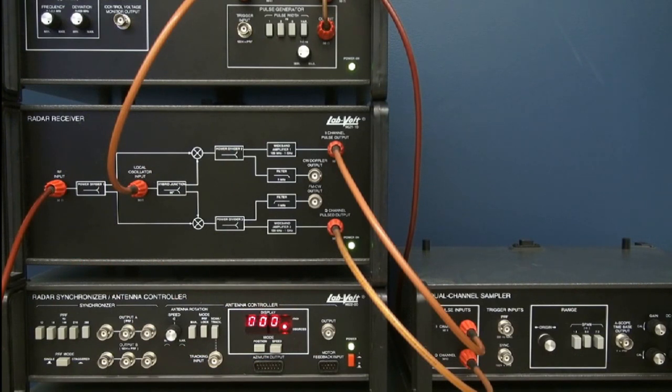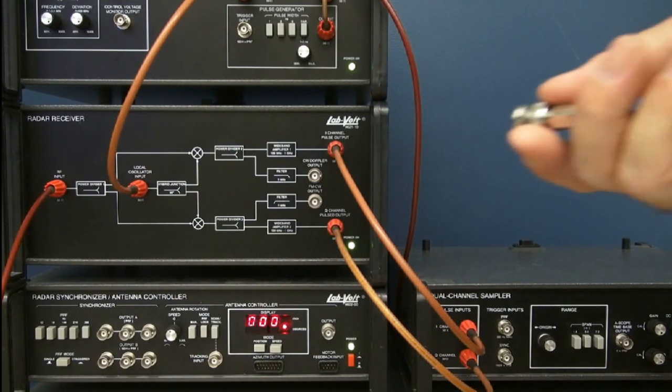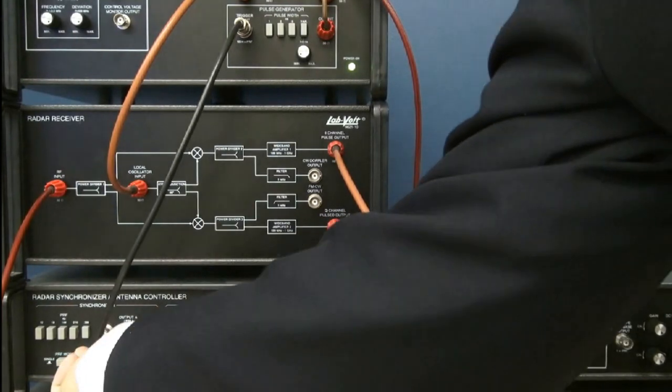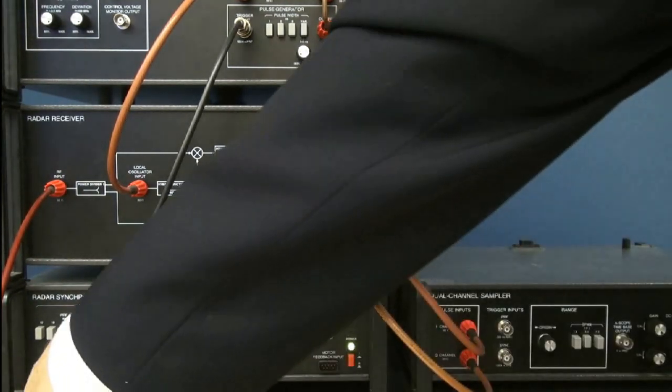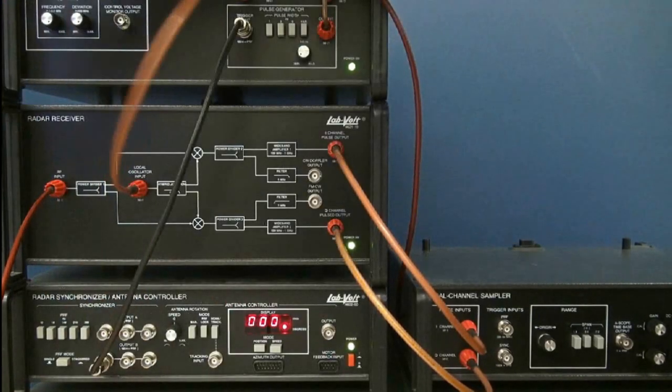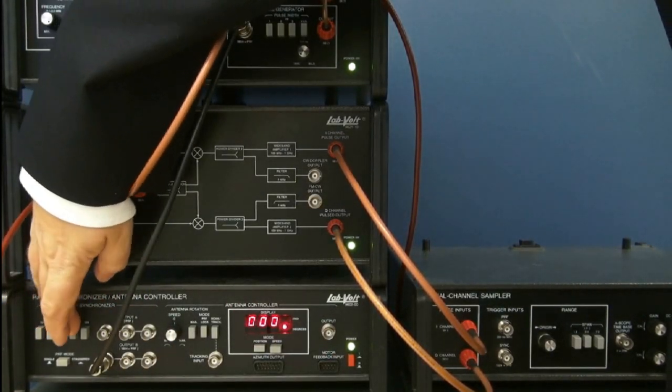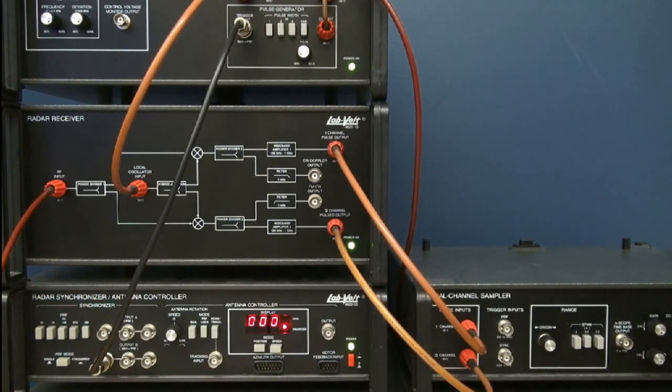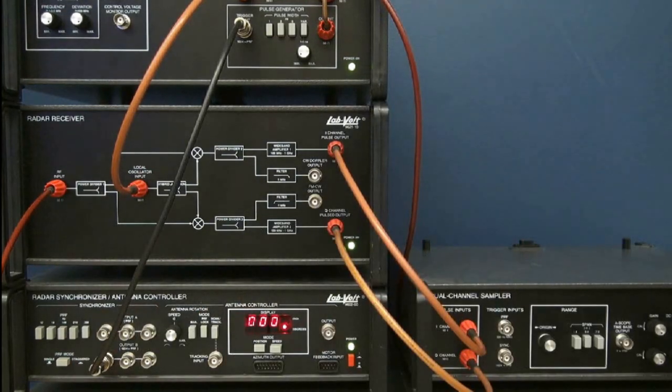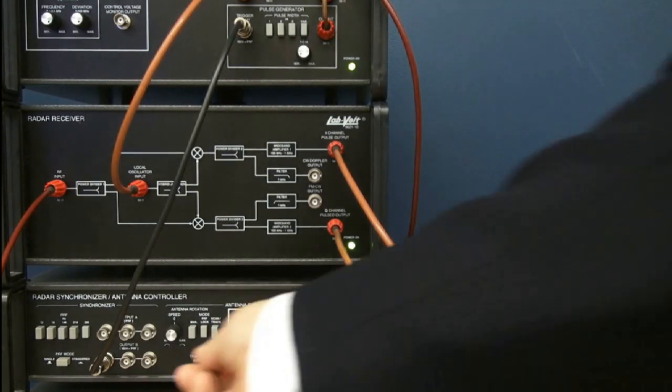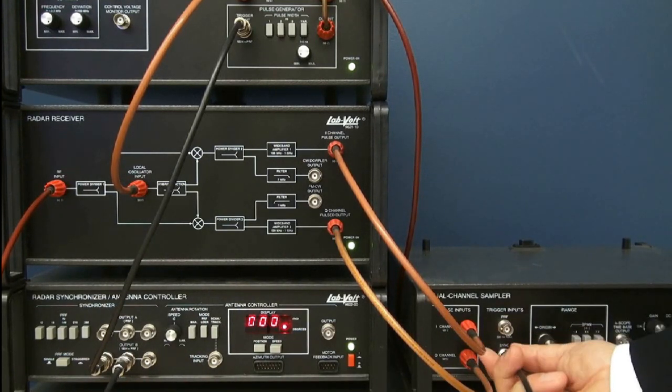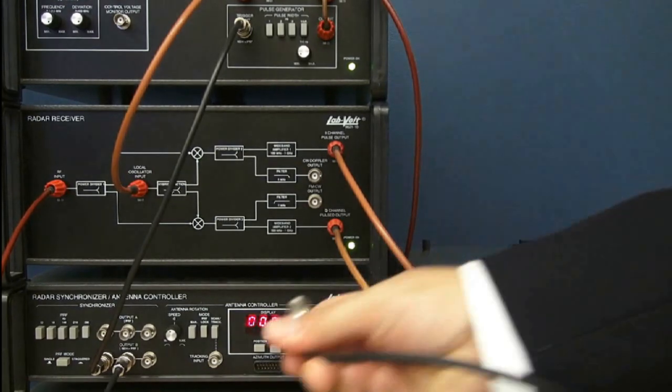The radar synchronizer is used to generate the pulse repetition frequency. So the pulse generator trigger input will be connected to the synchronization signal and this can be changed by one of those knobs here. Here the PRF can change between 12 pulses per second, 16, 144, 216, or 288 pulses per second. You also have the option of using a staggered PRF. This signal also has to be sent to the dual sampler along with the PRF itself.